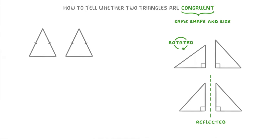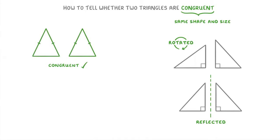So if we were given these two triangles, these ones would be considered congruent, because they're both exactly the same shape and size. In fact, these ones even have the same orientation, which makes them look completely identical. It's unlikely you'll get this sort of example in the exam where the two are completely the same orientation, but it is possible, and they still count as congruent.